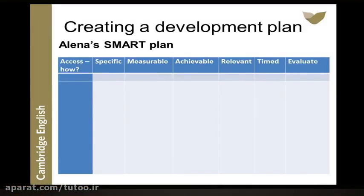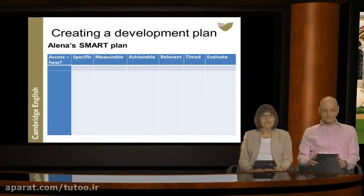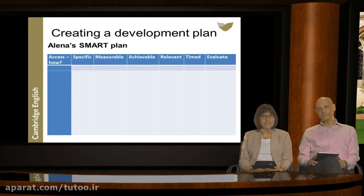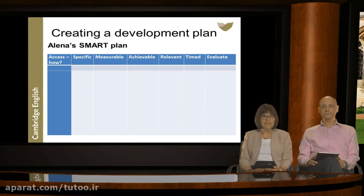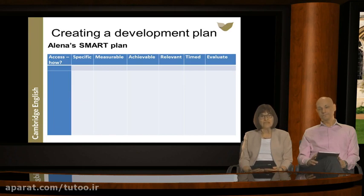SMART objectives are: Specific, Measurable, Achievable, Relevant, Time-bound, and evaluable. First, use the framework to identify a specific training need relevant to your situation — for example, to improve the way you conduct post-lesson discussion with teachers you observe. Once you've identified an area for development, decide how you will measure whether you've achieved success. Then decide what you'll do to develop in this area — find an activity which is achievable for you, decide when you'll do it, and finally decide how you will evaluate the effectiveness of the development activity.